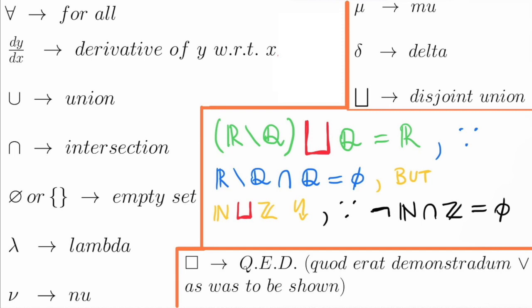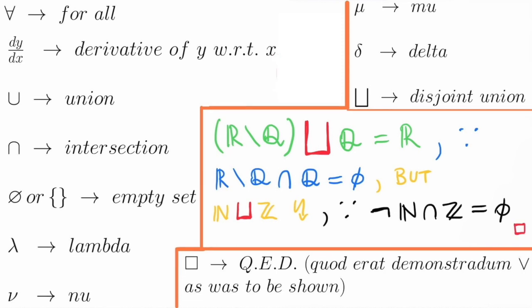And the last one is this square that is put in the end of a mathematical proof to denote QED, or in Latin, quod erat demonstrandum, or in English, as was to be shown. And that's it.